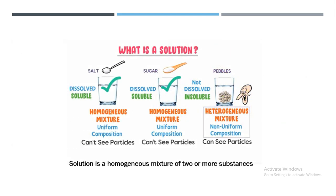Starting from solutions — when we make salt in water or sugar in water, we observe that it easily dissolves in it. So when we make a solution, we are dissolving something that is in smaller quantity in another liquid that is in bigger quantity. It may be a liquid, a solid, or a gas, so there are different types of solvents.